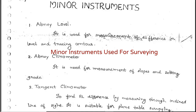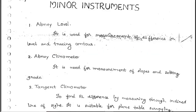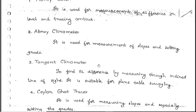We have some minor instruments for surveying. The first is the Abney level, which is used for measurements of difference in level and tracing contours. The Abney clinometer is used for measurement of slopes and setting grade.